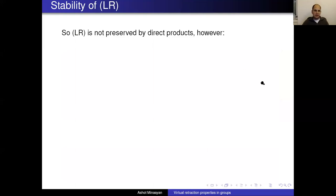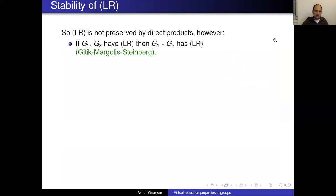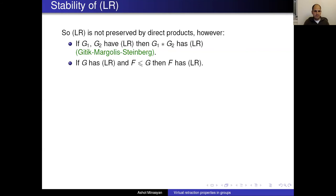Let's go to stability properties of LR. LR is not a property enjoyed by many groups, so we don't expect it to be very stable. It is stable under free products — proved by Diekert, Margolis, and Steinberg — but not stable under direct products, as the F_2 × F_2 example shows. It is stable under passing to any subgroup, just like residual finiteness.